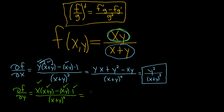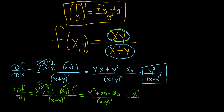Distributing x: x times x gives x squared, plus xy, and then minus xy. All over (x + y) squared. The xy terms cancel, so we just get x squared over (x + y) squared, and that is the final answer for ∂f/∂y.